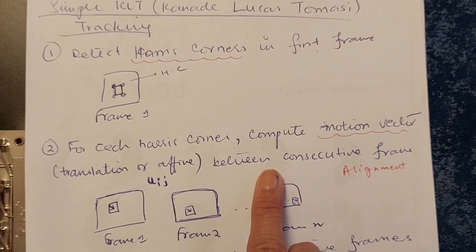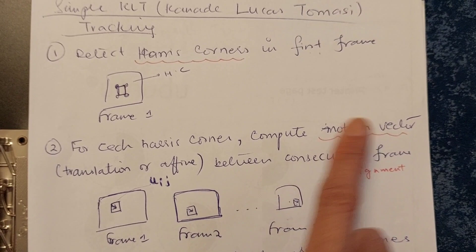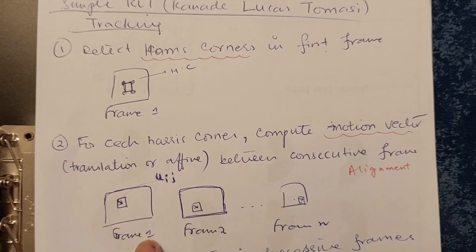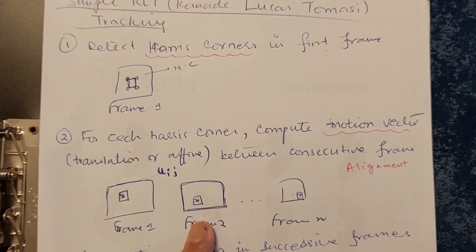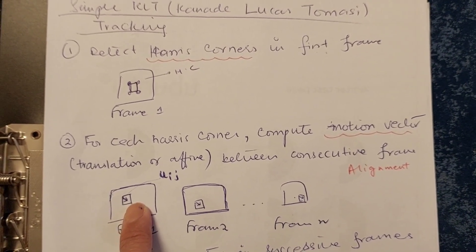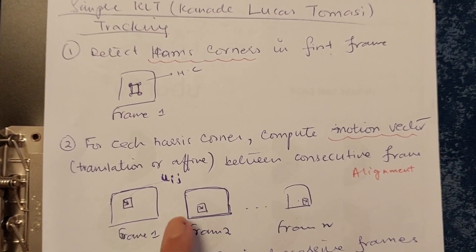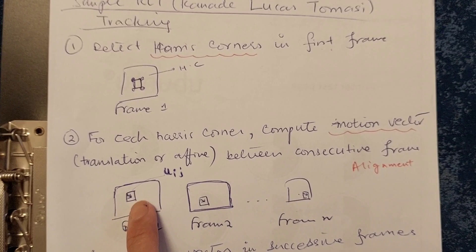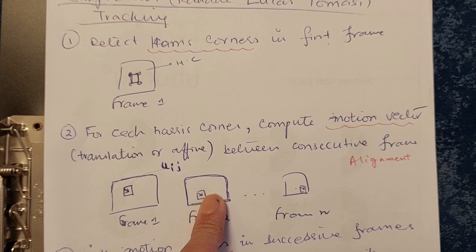The next step says that for each Harris corner we have to compute the motion vectors. These motion vectors can be translation vectors or affine vectors between consecutive frames. For example, this is frame one of the video and this is frame two. We find out how this Harris corner is going to move — if it is at one position in frame one, it will be at a different position in frame two.